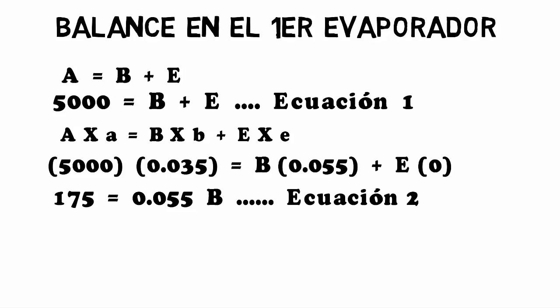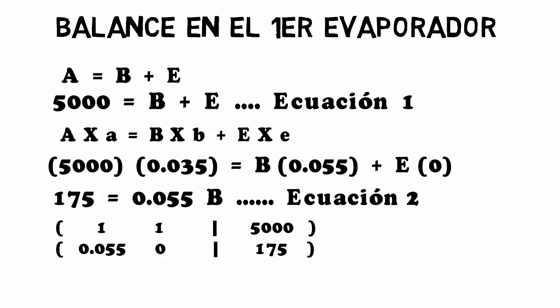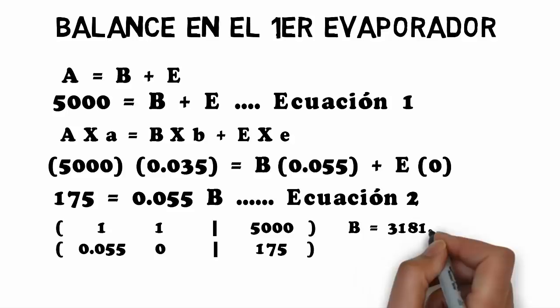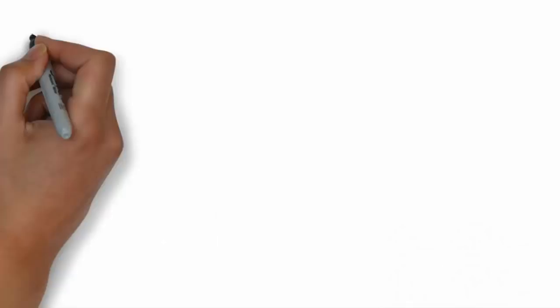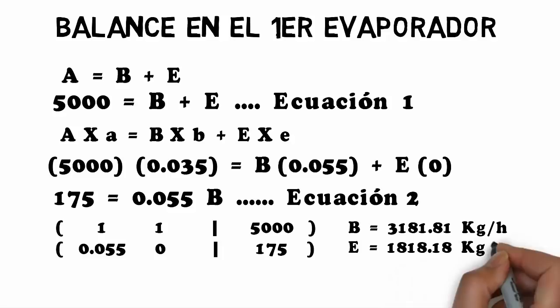Equations 1 and 2 are entered into a university calculator as a matrix to solve the system of equations. The results are: B equals 3181.81 kg/h and E equals 1818.18 kg/h.